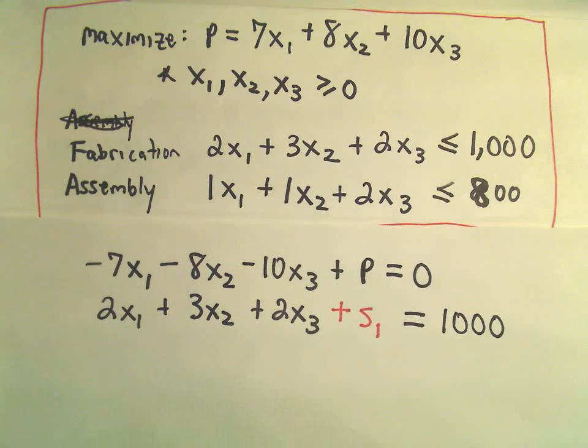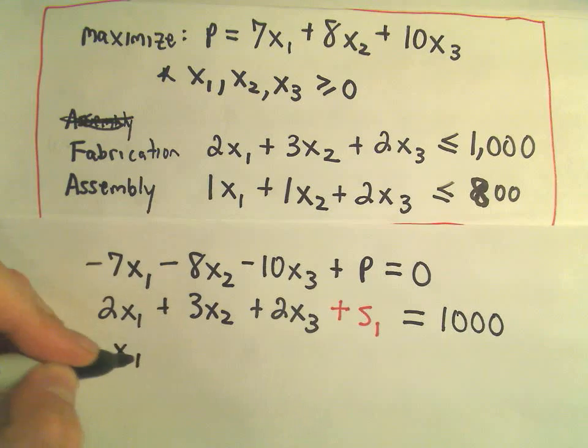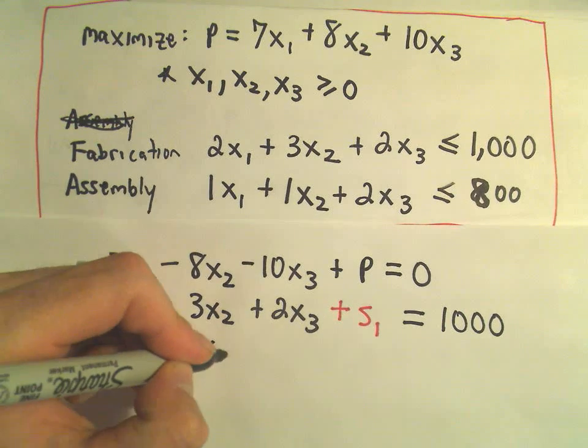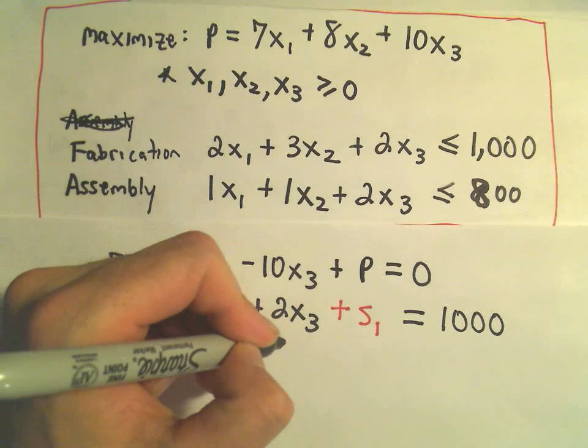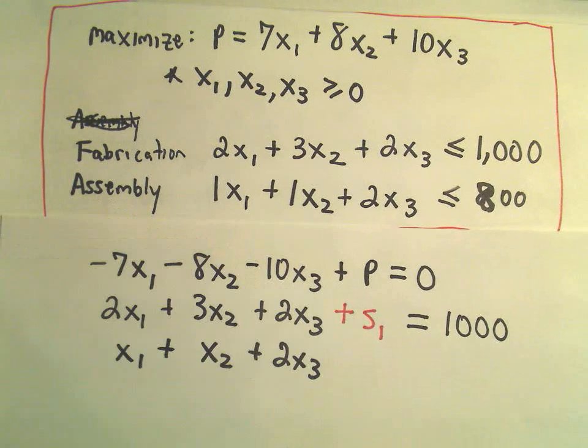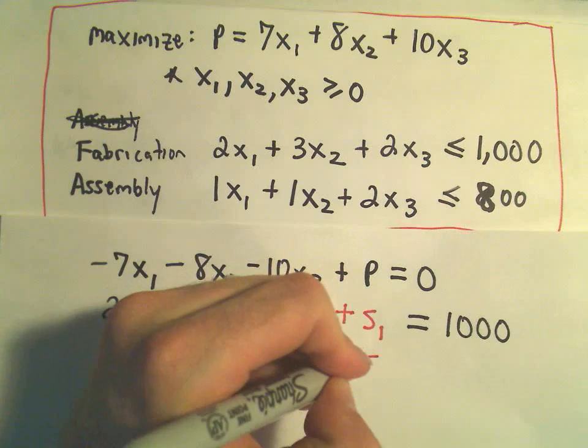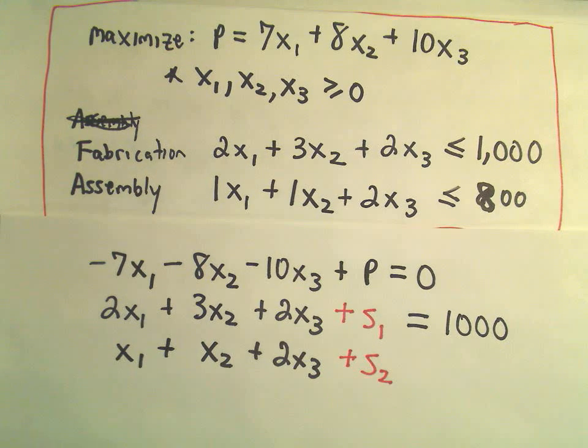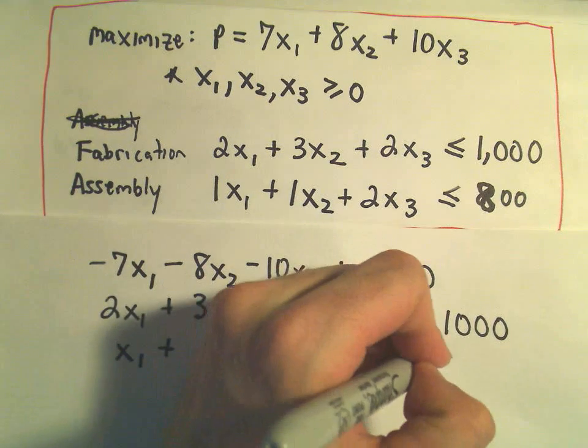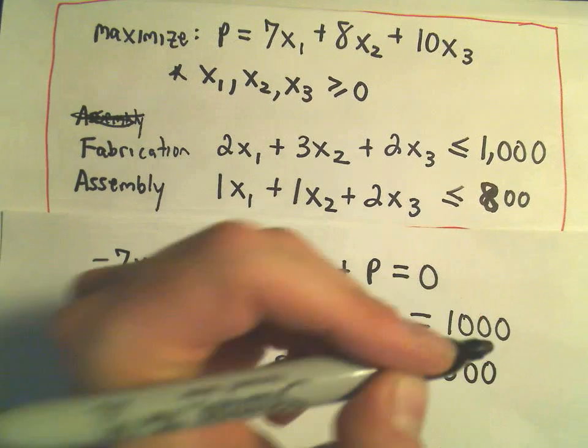I'm going to do the same thing with my other inequality, so we've got 1x1 plus 1x2 plus 2x3, and again I'm going to introduce a new slack variable, in this case I'll call it s2, and now instead of having less than or equal to 800, this is going to turn into equals 800.